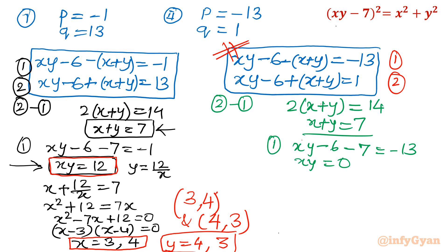So xy is equal to 0. So we can write either y equal to 0. If y equal to 0, put y equal to 0 here, then x will be 7. If x is equal to 0, then y will be 7. You can use both equations. So 2 standard pairs you will get: 7, 0 and 0, 7.